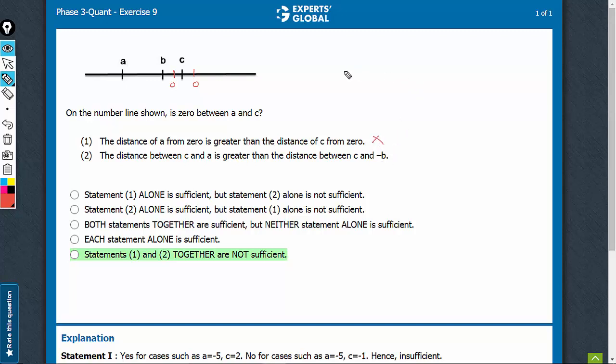Look at statement 2 now. Let's draw it again. We have A, B, and C. This distance CA is greater than distance between C and minus B. One case is, let us say, 0 lies somewhere here and minus B will be somewhere here. B is negative in this case, minus B is something positive and it lies here. In this case, the answer is yes. 0 is between A and C.